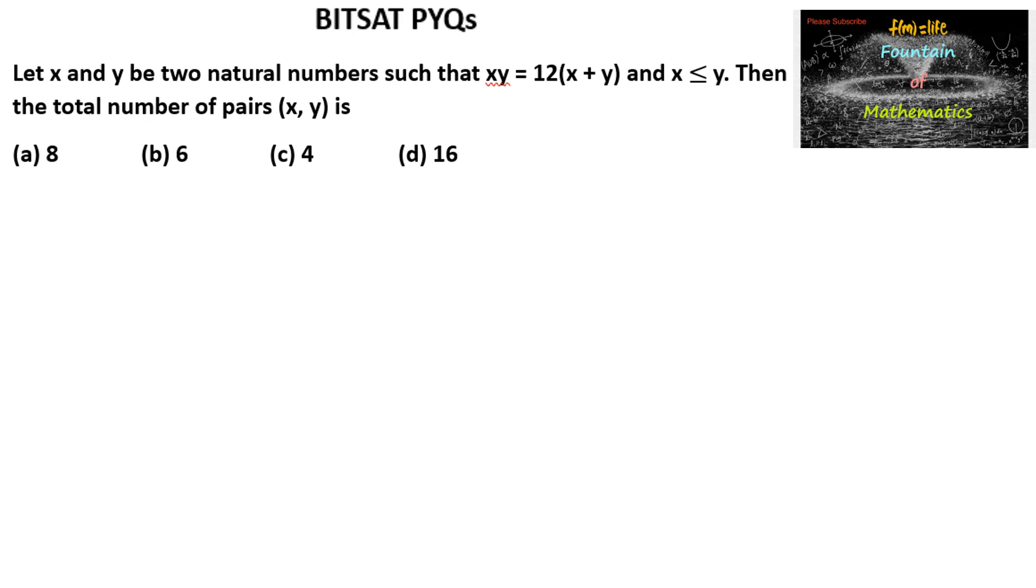Let x and y be two natural numbers such that xy equals 12 times (x plus y), where x is less than or equal to y. Find the total number of pairs (x, y).